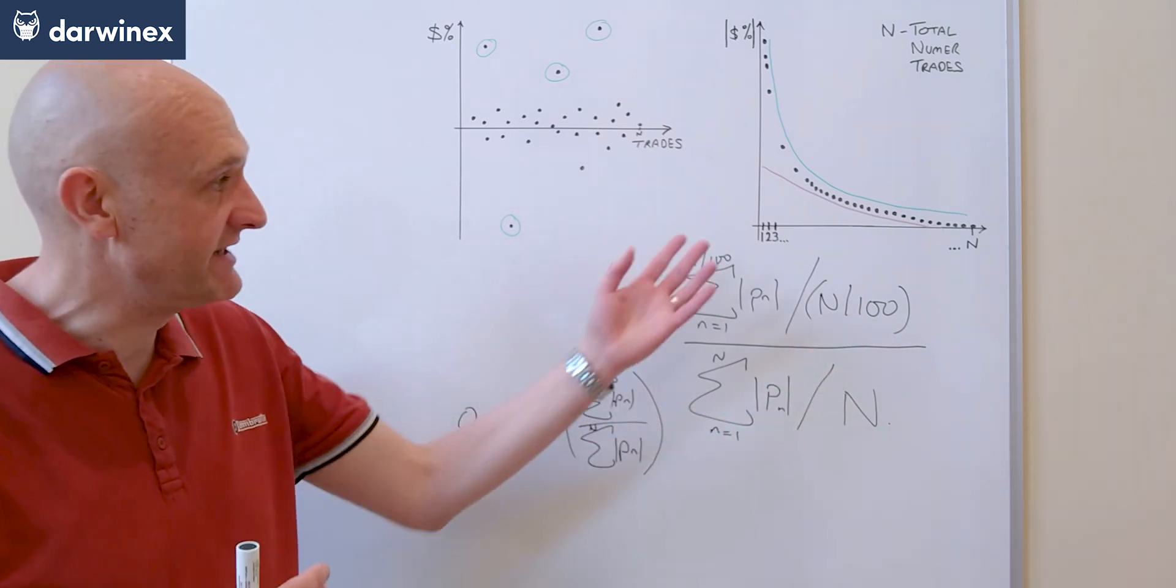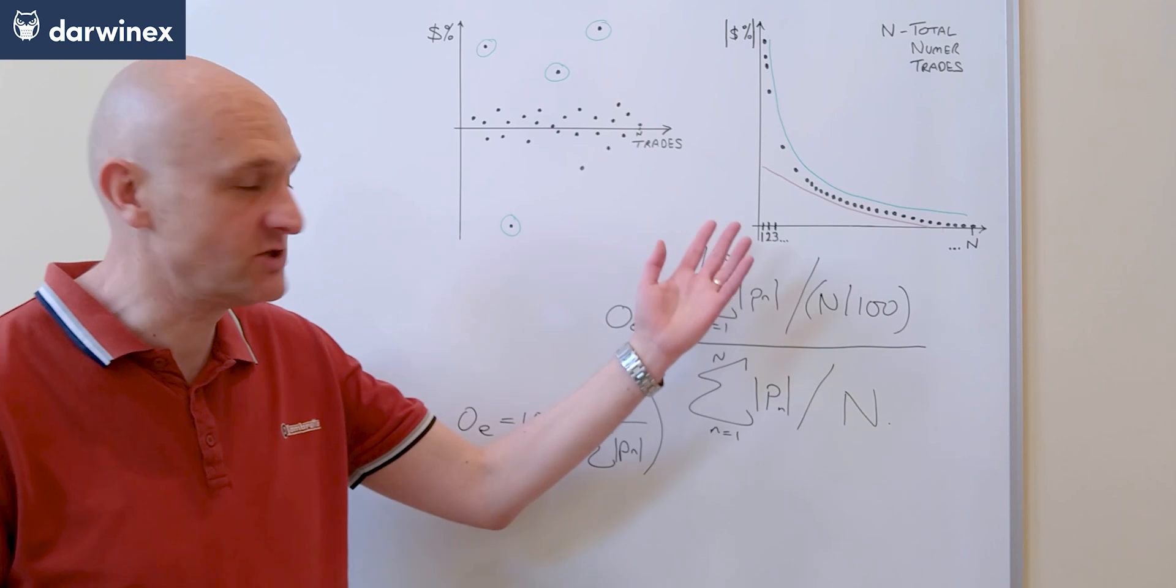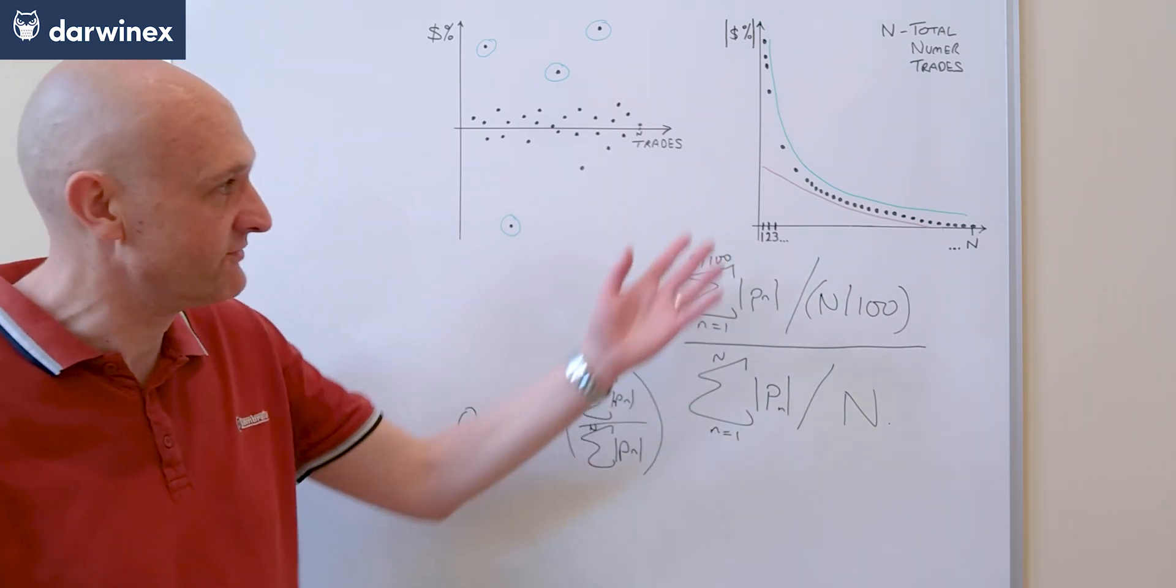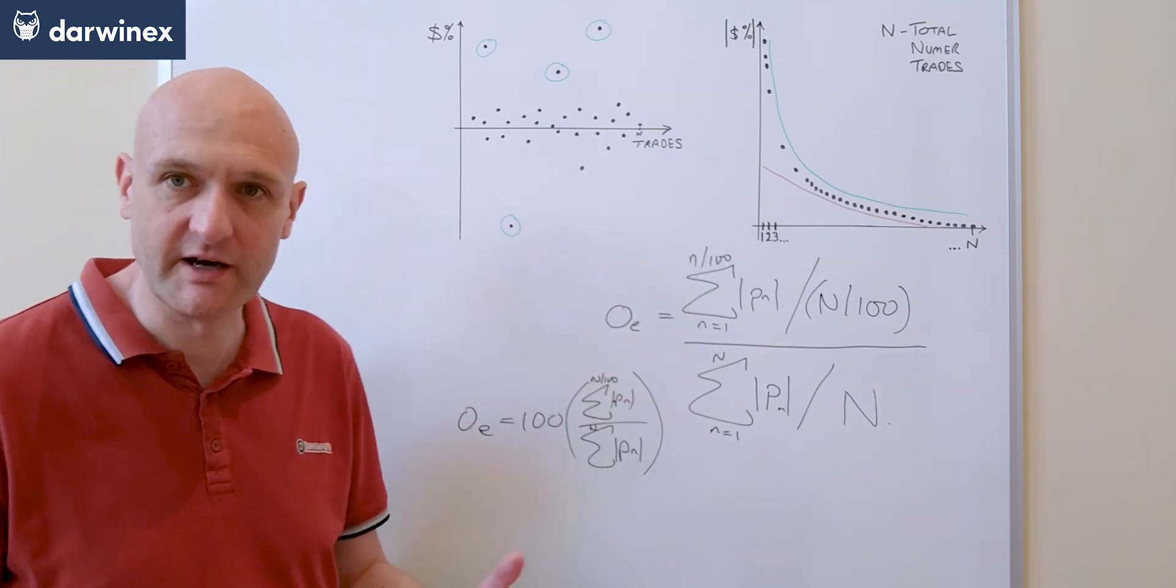If you decide to change this and maybe look at the top two percent of trades, then this would be 50 in that particular case. If it was four percent of trades it would be 25, and so on.